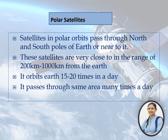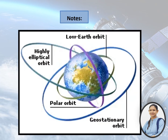A polar orbit is an orbit in which a satellite passes above or nearly above earth's north and south poles on each revolution. These satellites are very close to earth, in the range of 200 to 1000 km from the surface. It orbits the earth 15 to 20 times in a day. These satellites travel north to south over the poles and take approximately an hour and a half for a full rotation. Polar orbits have an inclination of about 90 degrees to the equator.